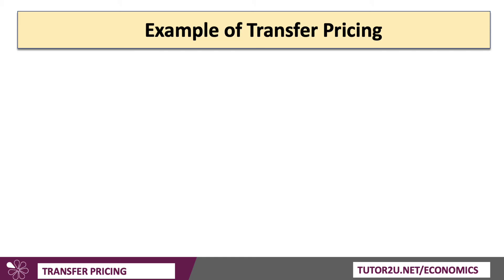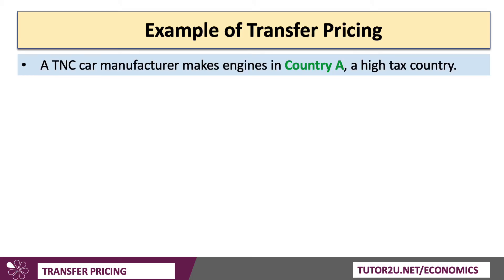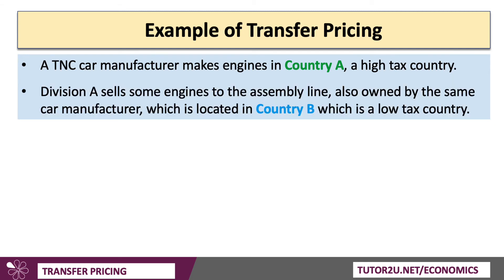Let's work through a little example of transfer pricing. Consider a transnational carmaker making engines in Country A, which is a high tax country. Division A, based in Country A, sells some engines to an assembly line, which is also owned by the same car manufacturer, but that assembly line is located in Country B, which is a low tax country. So Country A is a high tax nation, Country B is a low tax economy.